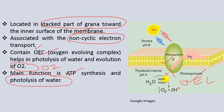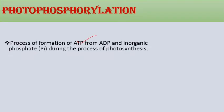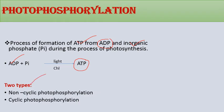Photophosphorylation is the process of formation of ATP from ADP and inorganic phosphate in the presence of light during photosynthesis. The reaction involves ADP combining with inorganic phosphate in the presence of light and chlorophyll to give rise to ATP. There are two types: non-cyclic photophosphorylation and cyclic photophosphorylation.